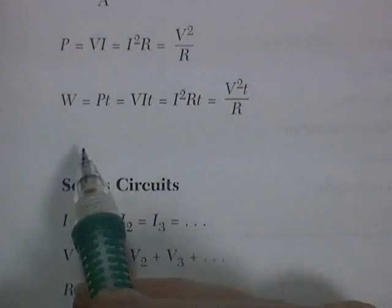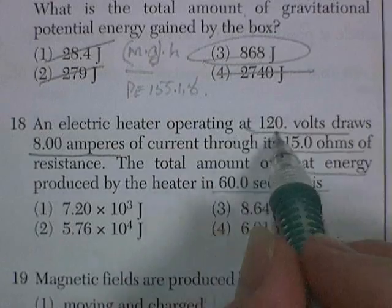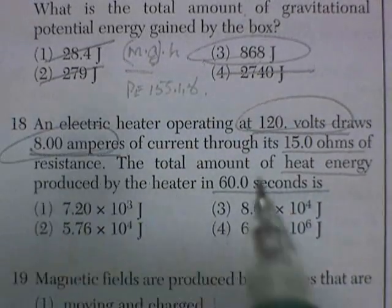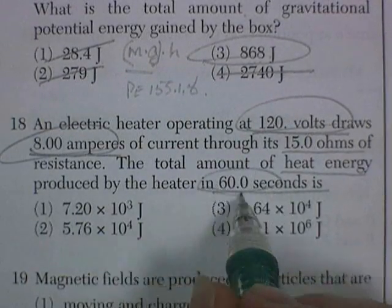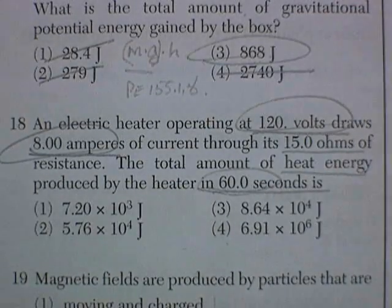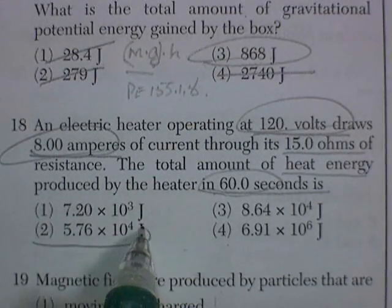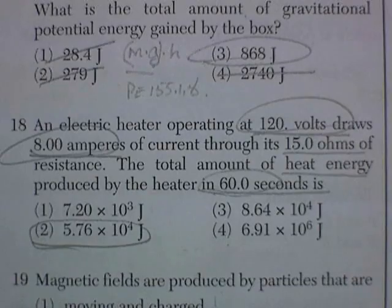Voltage times current times time. I think I've got voltage. I've got current. And I've got time. So I'm going to just go ahead and get the calculator out for this. And there we are at 5, 7, 6 with some zeros behind it.